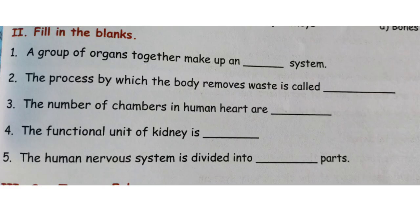Next, Section 2: Fill in the blanks. Number 1: A group of organs together make up a __ system. Answer: organ system. Number 2: The process by which the body removes waste is called __. Answer: excretion.